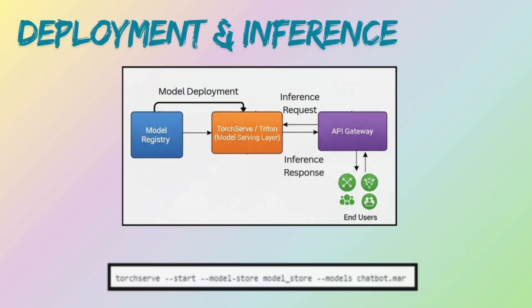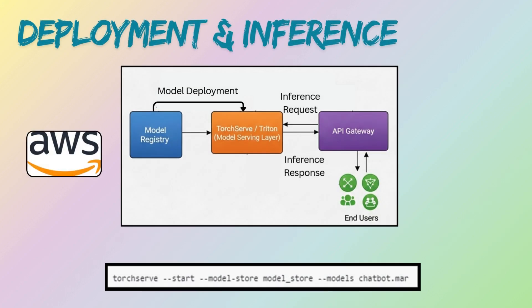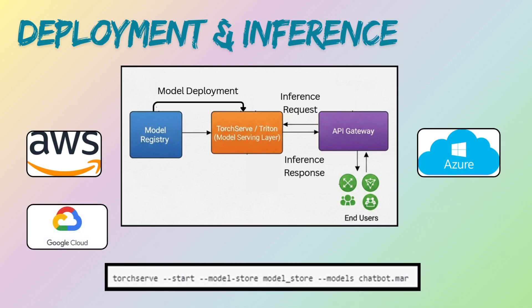After training, the model is deployed via scalable APIs for real-time inference. Cloud platforms like AWS, Azure, and GCP host these models. Model responses are cached by CDNs like Cloudflare for speed. Serving millions of requests per day demands scalability and optimization. Let's discuss a few optimization techniques.